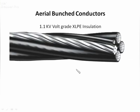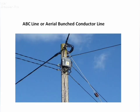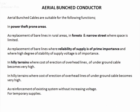Now we will look at Aerial Bunched Conductor (ABC). You can see a picture of 1.1 kV XLPE insulated bunched conductor — the neutral or messenger conductor and the phase conductors are bundled. ABC is mostly used to avoid theft; a 2.1 kV XLPE insulated ABC makes it very difficult to illegally hook into. Benefits include use in power theft-prone areas, forests, narrow streets, hilly terrain, and other areas.